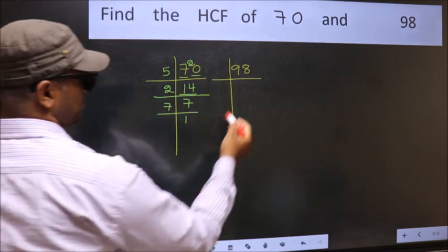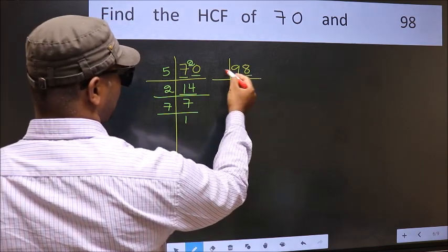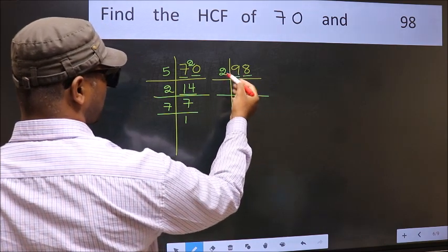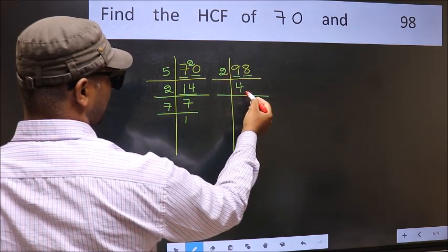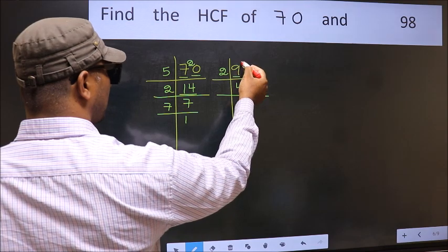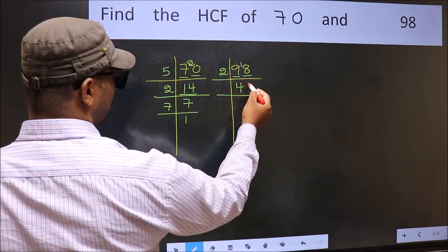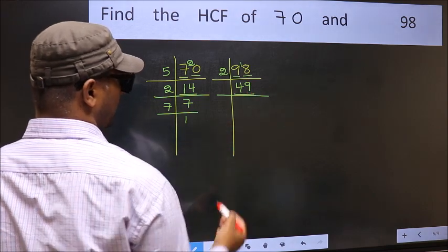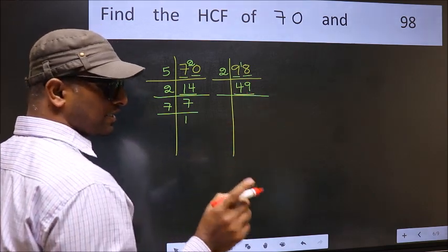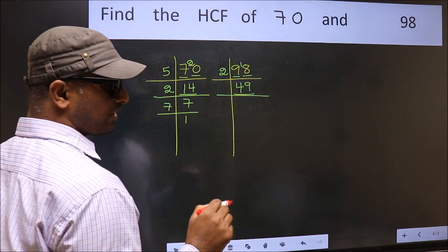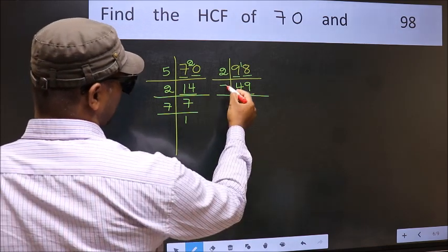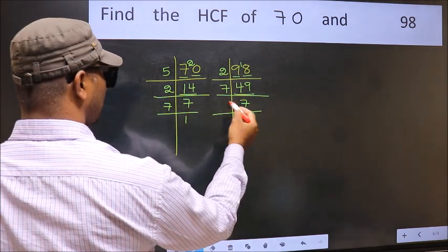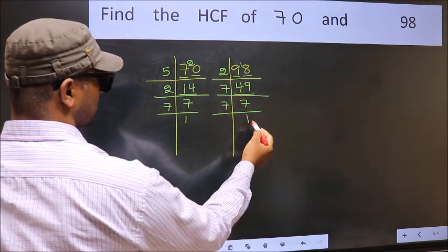Now the other number, 98. The last digit is 8, which is even, so we divide by 2. The first digit is 9; a number close to 9 in the 2 times table is 2 fours 8. 9 minus 8 is 1, carried forward to give 18. We get 18 in the 2 table as 2 nines 18. Now we have 49. Always remember 7 times 7 is 49. Since 7 is a prime number, 7 once 7.